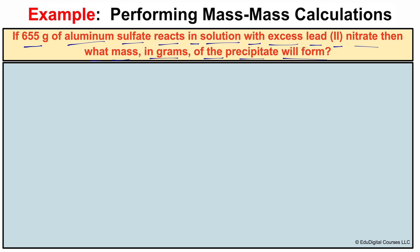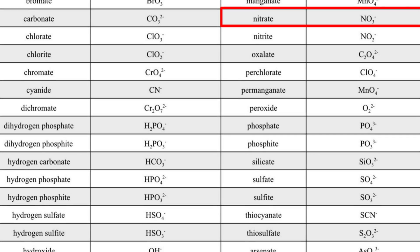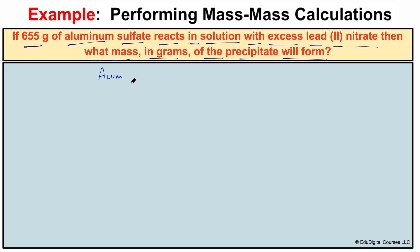Taking a look at this problem, we can see there are two reactants: aluminum sulfate reacting with lead two nitrate. Before we can perform the stoichiometry to determine the mass in grams of the precipitate, we first have to write a correctly balanced chemical equation. So the two reactants are aluminum sulfate and lead two nitrate.